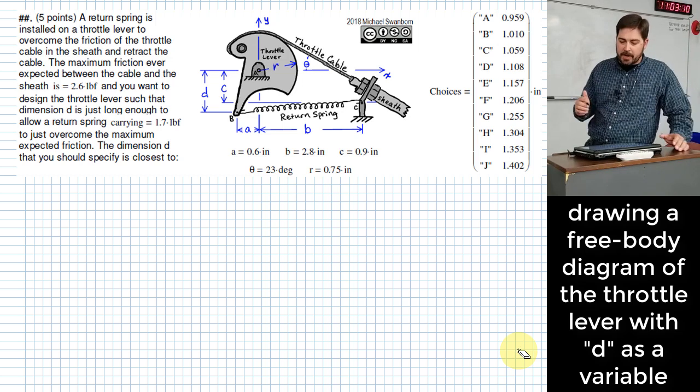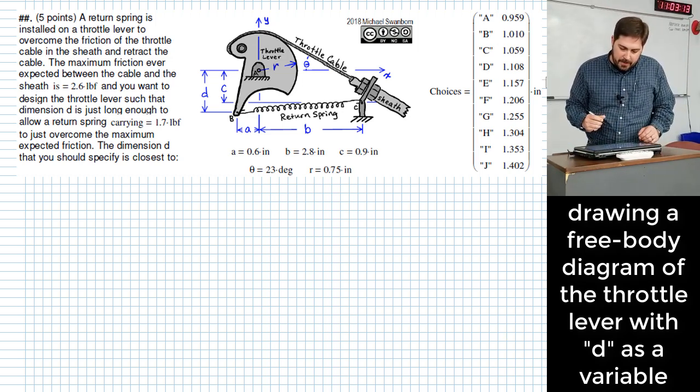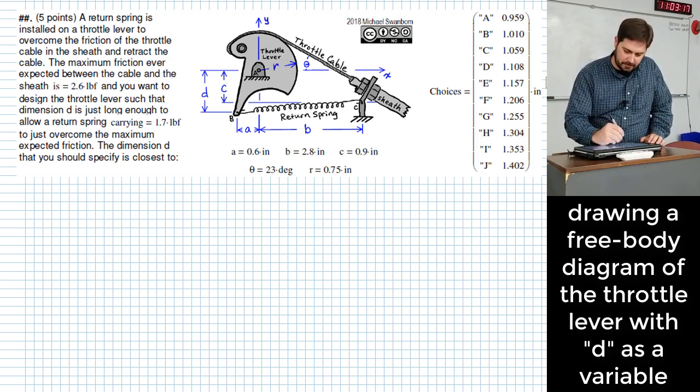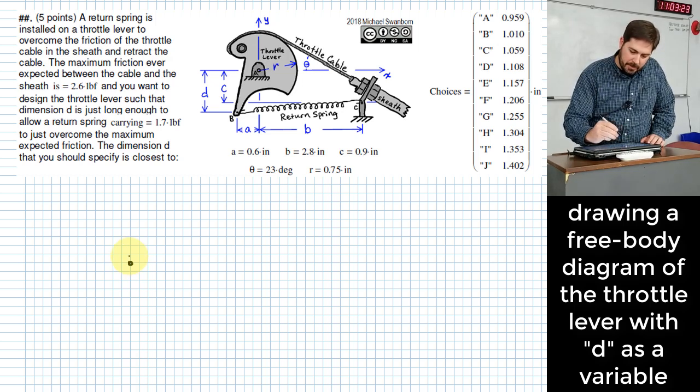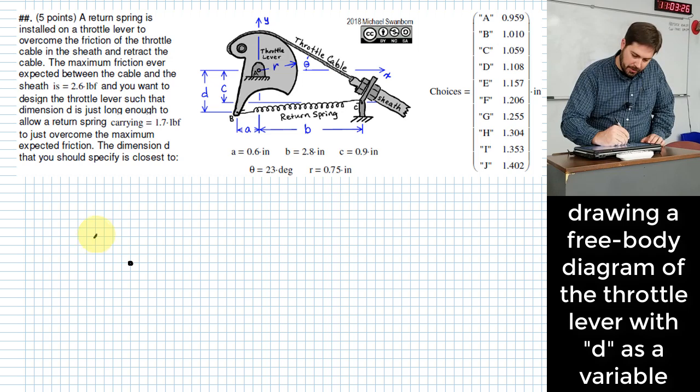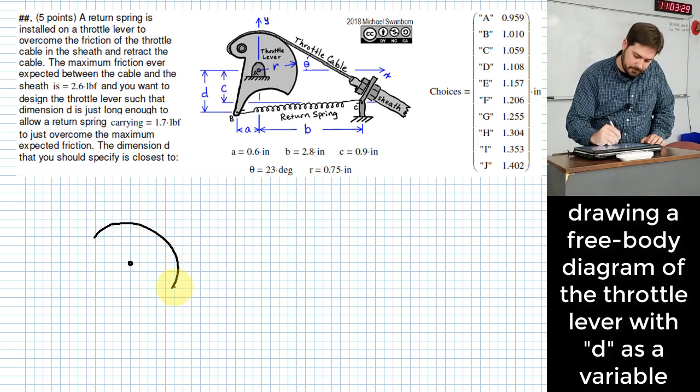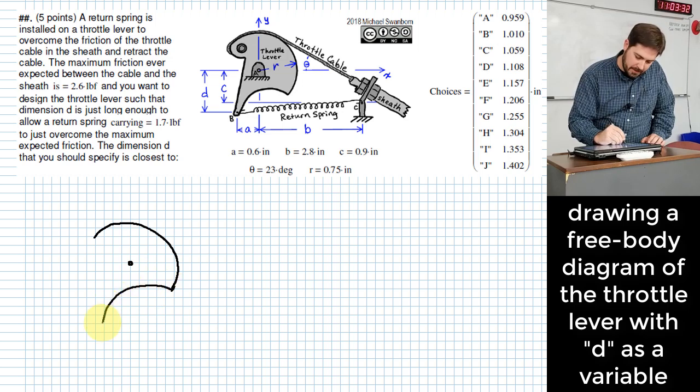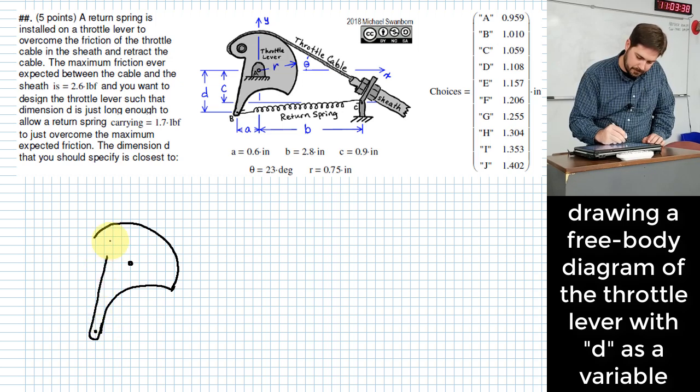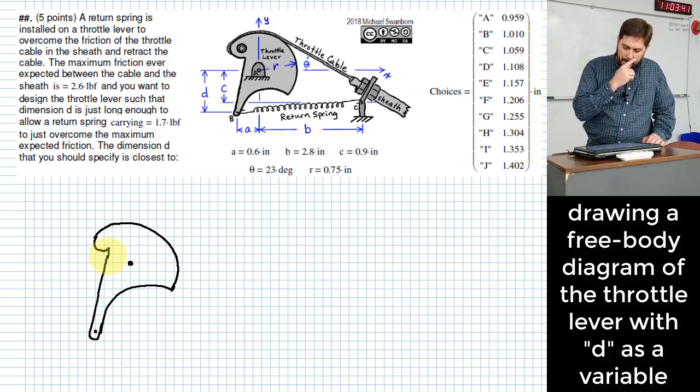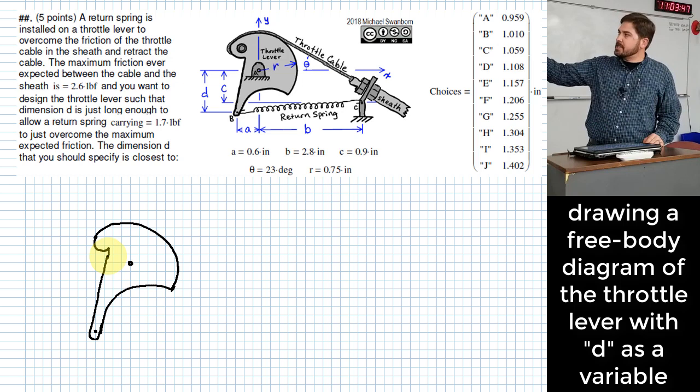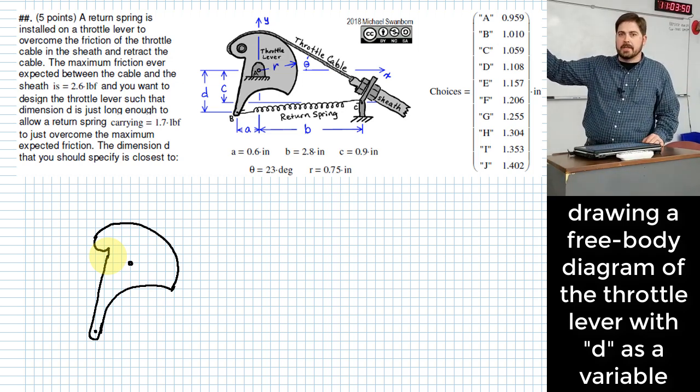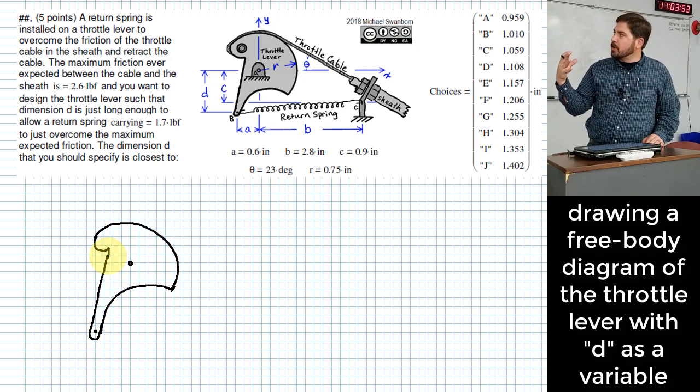Okay a free body diagram is probably a good place to start. Of what? Okay maybe the throttle lever itself would be a good place to do this. I'll try to draw it somewhat correctly, something like this with a little point down here. Close enough. What kind of forces? So I've isolated the body right? That's always our first step is isolate the body. So I've done that. What sorts of forces are applied to this body?